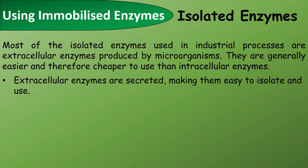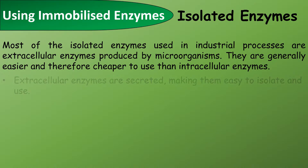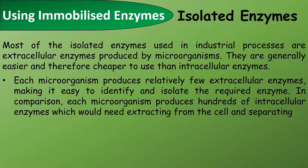Most of the isolated enzymes used in industrial processes are extracellular enzymes produced by microorganisms. They are generally easier and therefore cheaper to use than intracellular enzymes. Extracellular enzymes are secreted, making them easy to isolate and use. Each microorganism produces relatively few extracellular enzymes, making it easy to identify and isolate the required enzyme. In comparison, each microorganism produces hundreds of intracellular enzymes which would need extracting from the cell and separating. This separation would take a long time and would be very expensive.